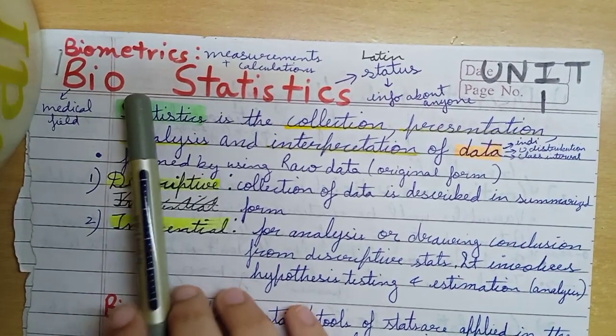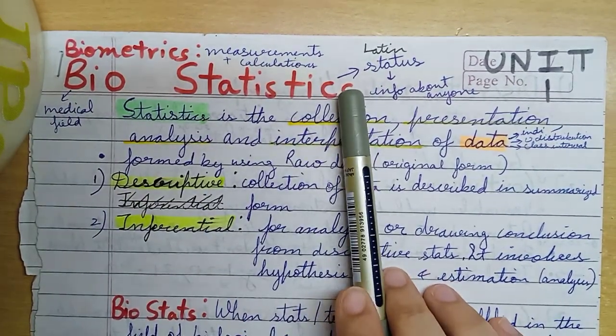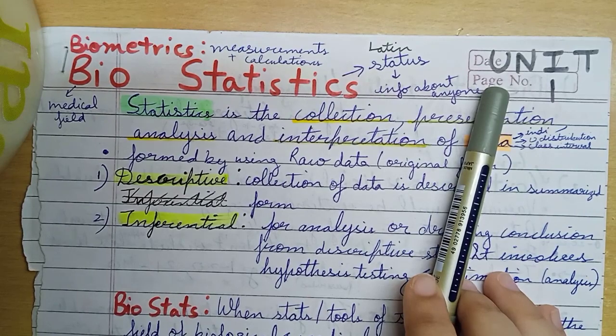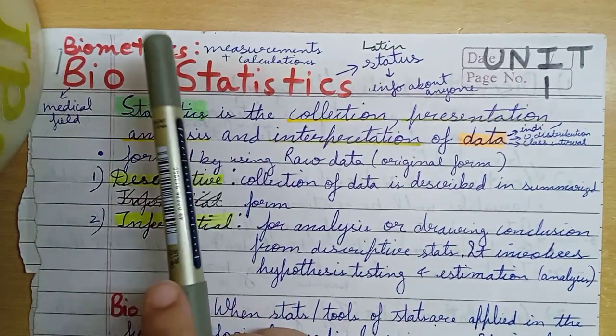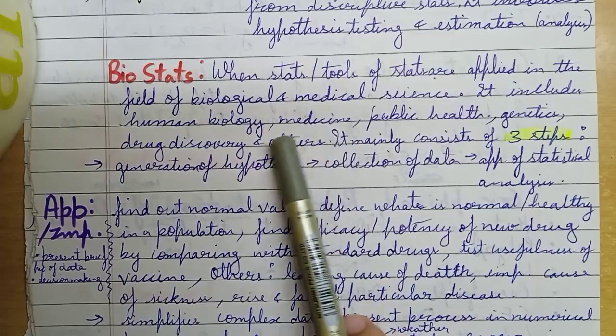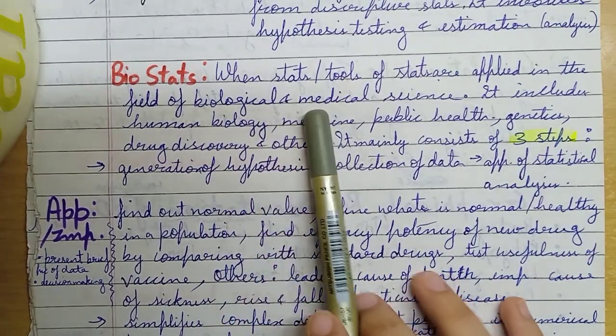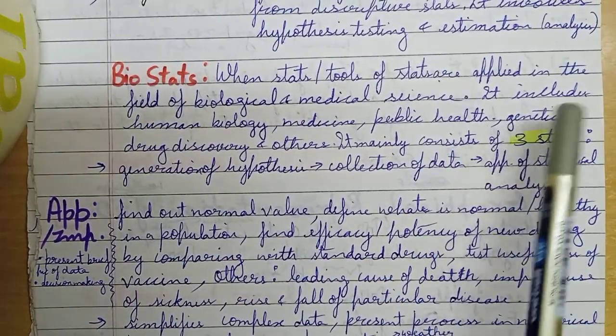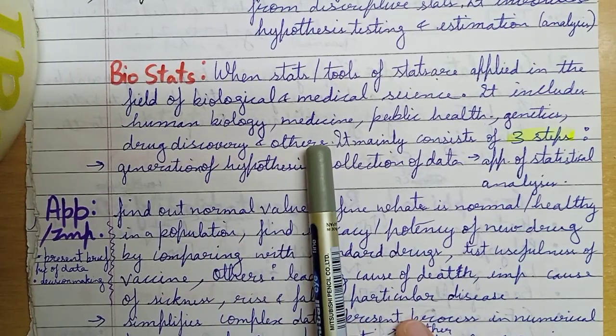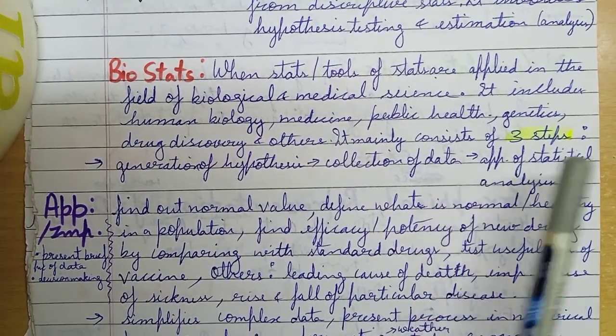Then biostatistics, which is based on bio, related to medical field, and statistics, the Latin word status meaning information about anyone. Biostatistics we also call biometrics because it is involved in measurements and calculations. When we apply the tools and stats to biological and medical science, we call it biostats, which includes human biology, medicines, public health, genetics, drug discovery, and others. There are three steps: first is generation of hypothesis, then collection of data, and last is application of statistical analysis.